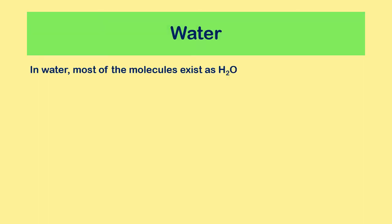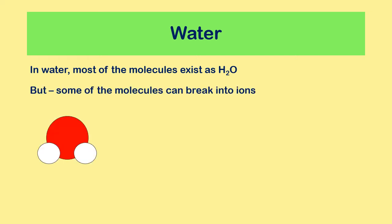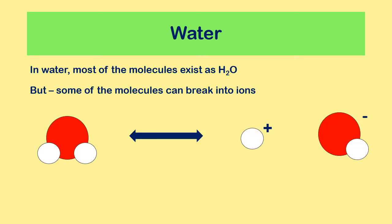In water, most molecules exist as H2O — two hydrogen atoms bonded to one oxygen atom. However, some of those molecules can actually break apart into ions. The water molecule breaks into just a hydrogen ion and a hydroxide ion. The hydrogen ion carries a positive charge because it left its electron behind with the oxygen when the bond broke.